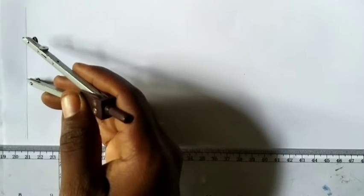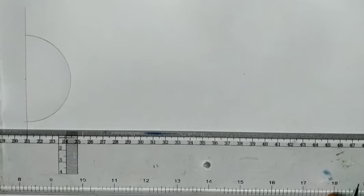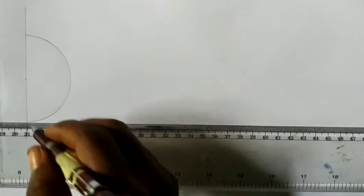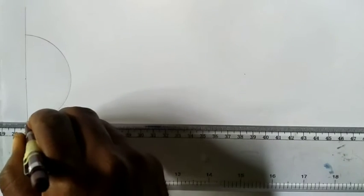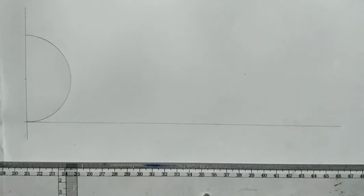And you place it at any point on this line. Then you draw your diameter, your semicircle, like this. Now this is the center of it, so from that center, from this point here, you draw a straight line like this. Can you see that?